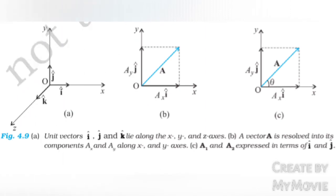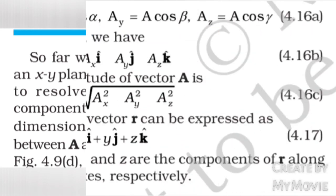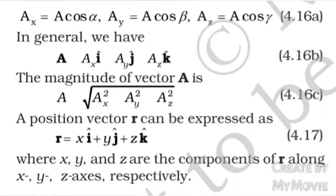Unit vectors î, ĵ and k̂ lie along the X, Y and Z axes. A vector A is resolved into its components AX and AY along the X and Y axes, and vectors A1 and A2 expressed in terms of î and ĵ. The same procedure can be used to resolve a general vector A into three components along the x, y and z-axes in three dimensions. If alpha, beta and gamma are the angles between vector A and the x, y and z-axes respectively (figure 4.9D), we have AX equals A cos alpha, AY equals A cos beta, AZ equals A cos gamma. In general, vector A equals AX î plus AY ĵ plus AZ k̂. The magnitude of vector A is A equals root of AX² plus AY² plus AZ².